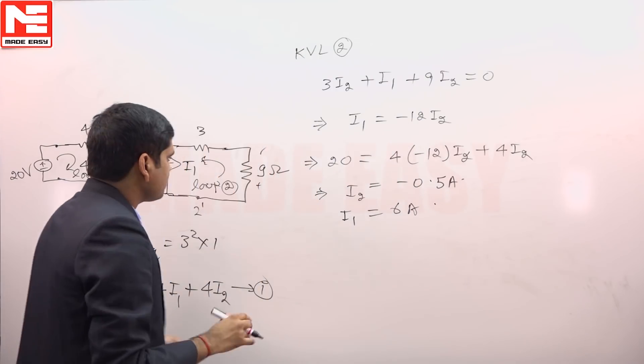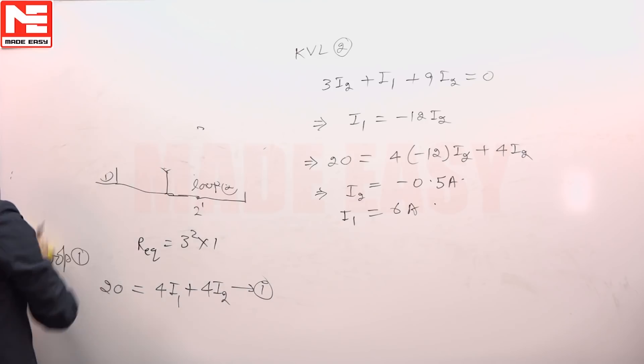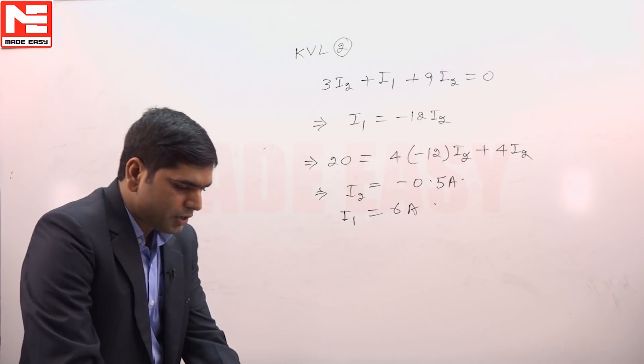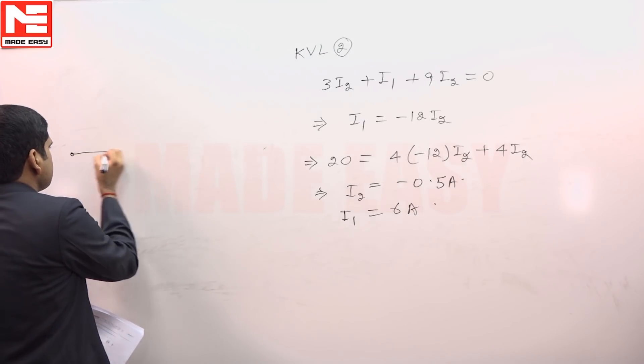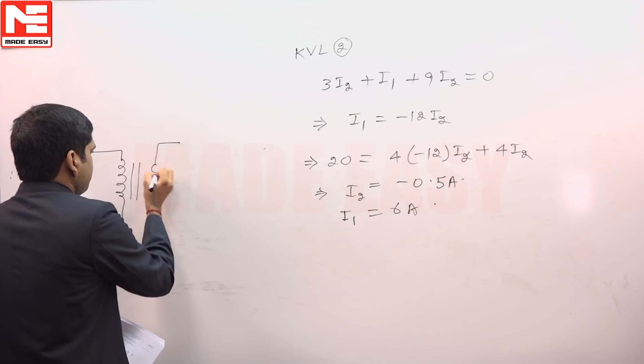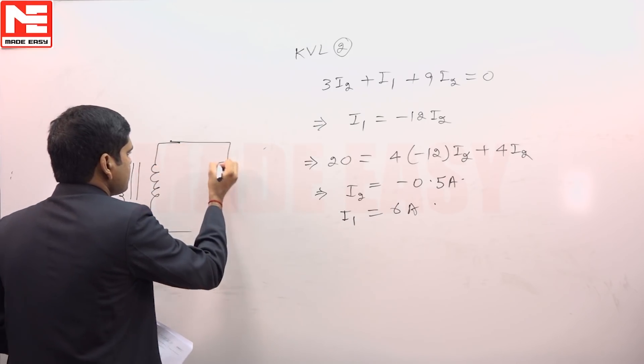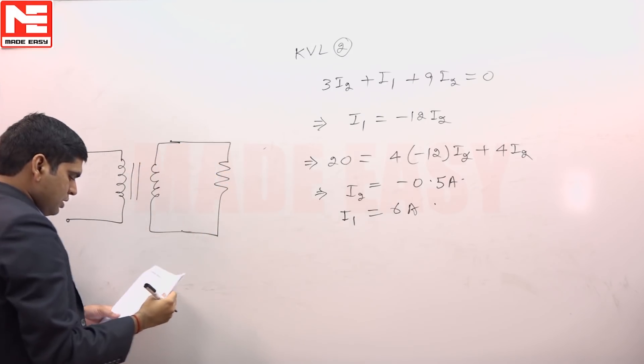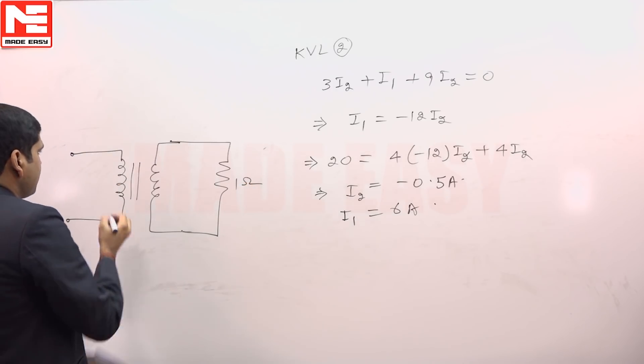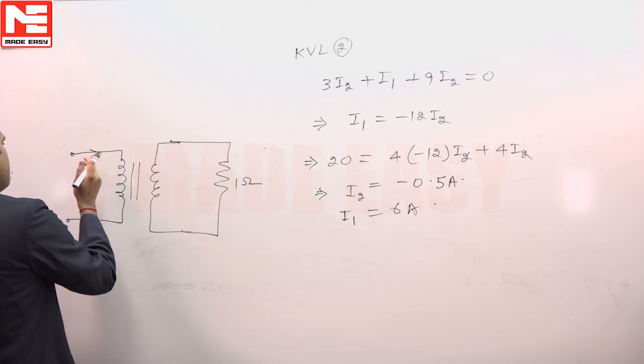We have calculated this I1 and I2. Let us have a look on the transformer. This is transformer with this turn ratio, and the resistance is 1 ohm. The current flowing here is I2, we have assumed this side, so minus 0.5, this side it is 0.5 ampere.